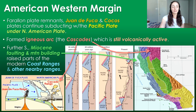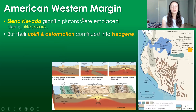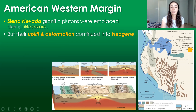Further south, within California mostly, Miocene faulting and mountain building raised parts of the coastal ranges and other nearby mountain ranges. However, the granitic plutons of Sierra Nevada were already emplaced by the Mesozoic — long before the Neogene — though their uplift and deformation continued into the Neogene. We can see in the center figure that 40 million years ago there was continued subduction and igneous activity at that western margin fueling Sierra Nevada's uplift. Around 30 to 20 million years ago, in the transition from Paleogene to Neogene, the nature of subduction changed enough to slow the igneous activity in Sierra Nevada, and instead uplift and deformation continued without the igneous activity.